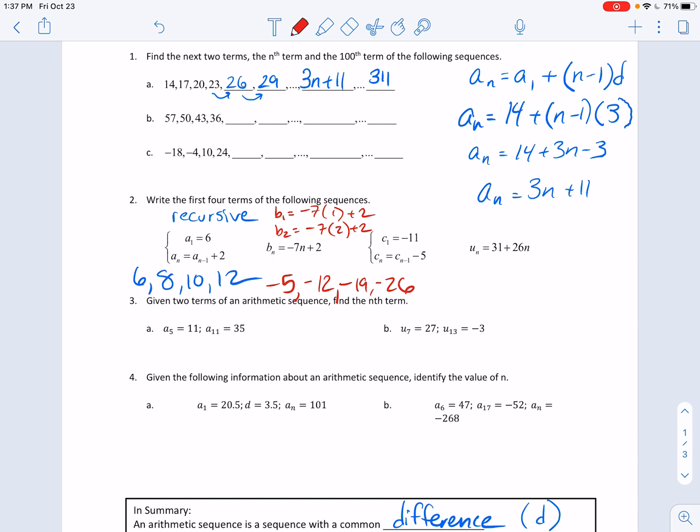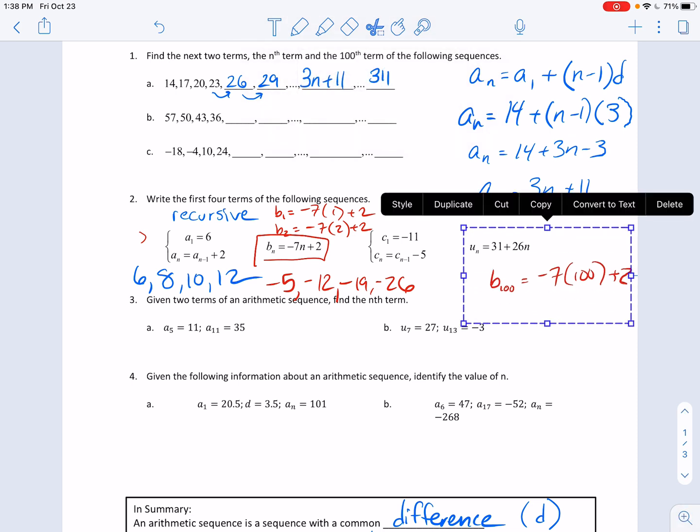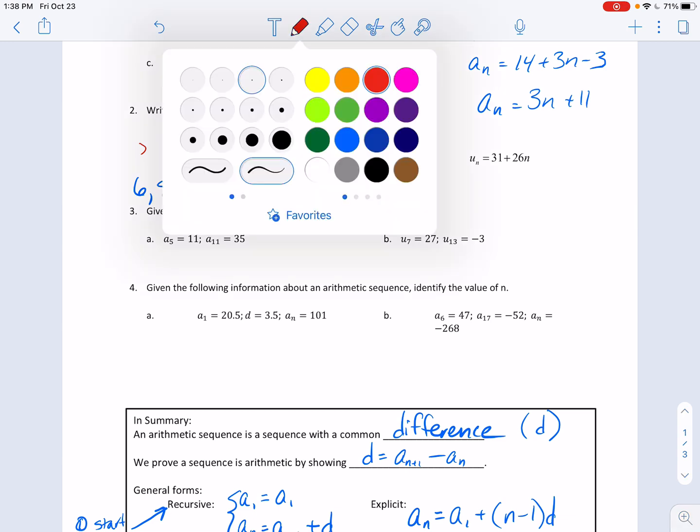B sub 1 would be what I get when I plug in 1, which is negative 7 plus 2 is negative 5, so that's the first term. The second term is when I plug in 2, negative 7 times 2 plus 2. That's negative 14 plus 2 is negative 12. I might notice that I'm just subtracting 7 each time. Now, if I tell you I want the 100th term in a sequence, it's a whole lot easier to use the explicit formula here as opposed to the recursive formula.